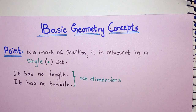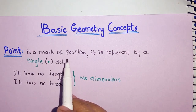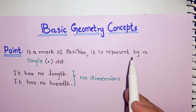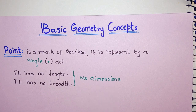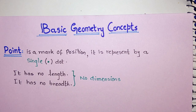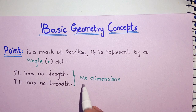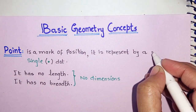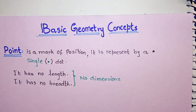In basic geometry concepts, the first concept is 'point'. A point is a mark of position — it is represented by a single dot. It is used to indicate a specific position or location. A point, called 'nuqta' in Urdu, has no length and no breadth, meaning it has no dimension.